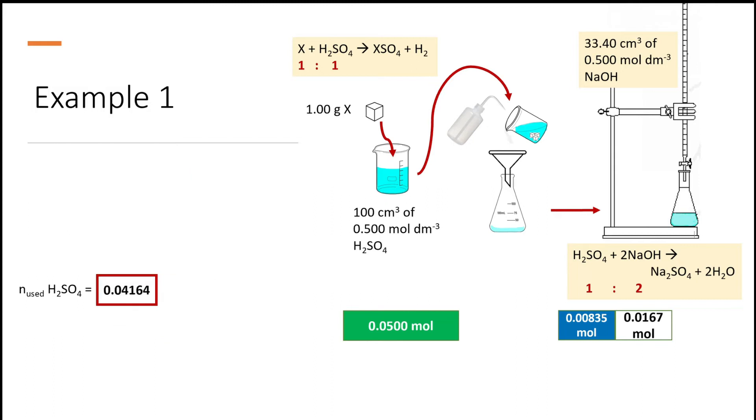And the sulfuric acid that reacts with metal X is found to be 0.04164 mole. The reaction of X and sulfuric acid is 1:1, so the number of mole of X is also 0.04164. Molar mass is mass per mole, so plugging in the numbers for X we get 24 gram per mole. This tells us that the element is most probably magnesium.